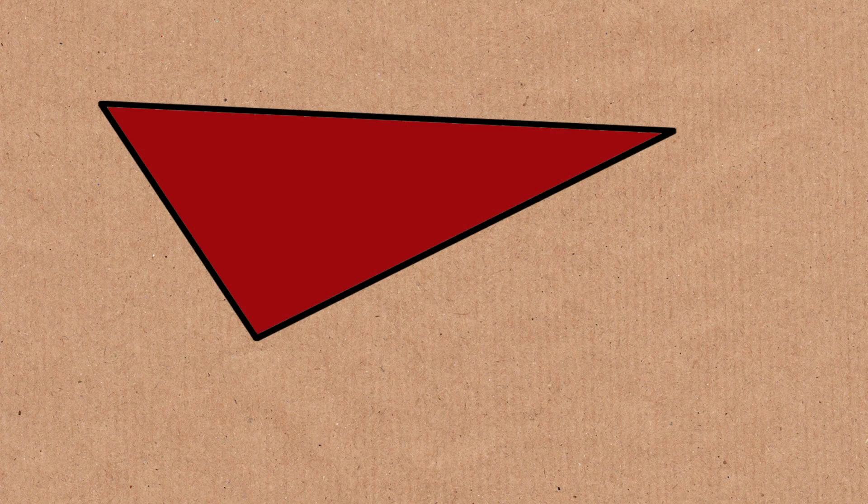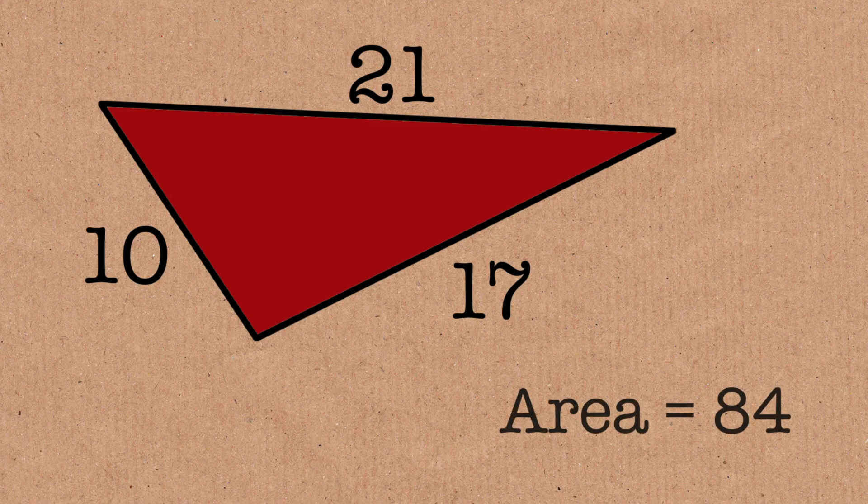A hero triangle is a triangle that has integer sides, whole number sides, and an integer area. It's just something that mathematicians like to play with and have fun with.